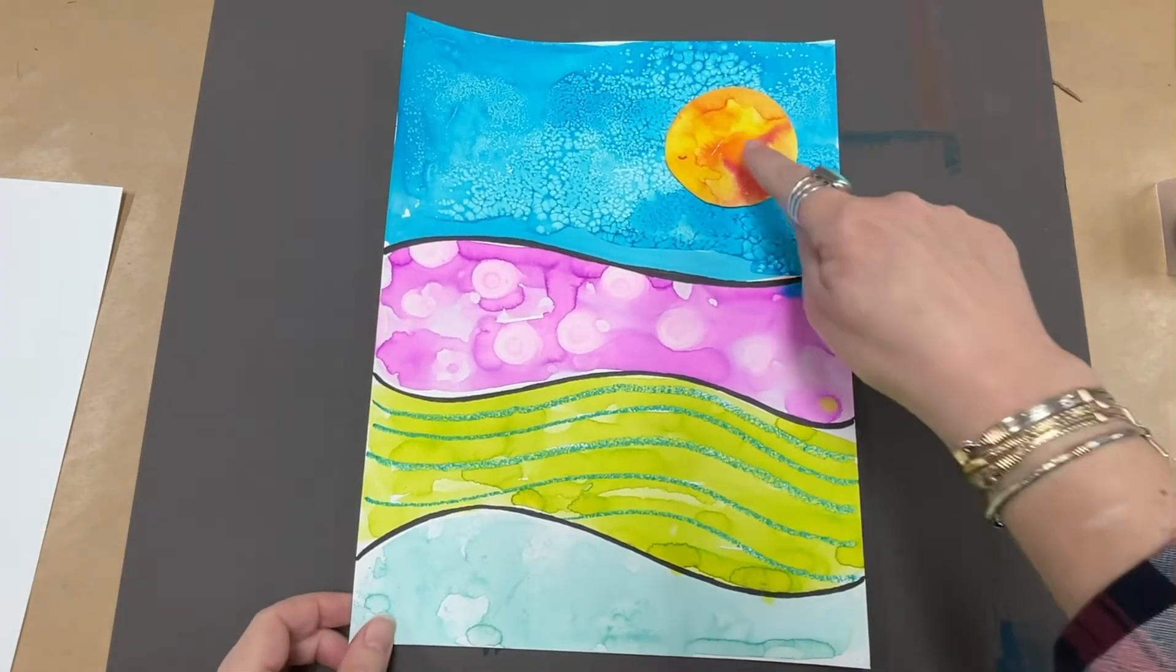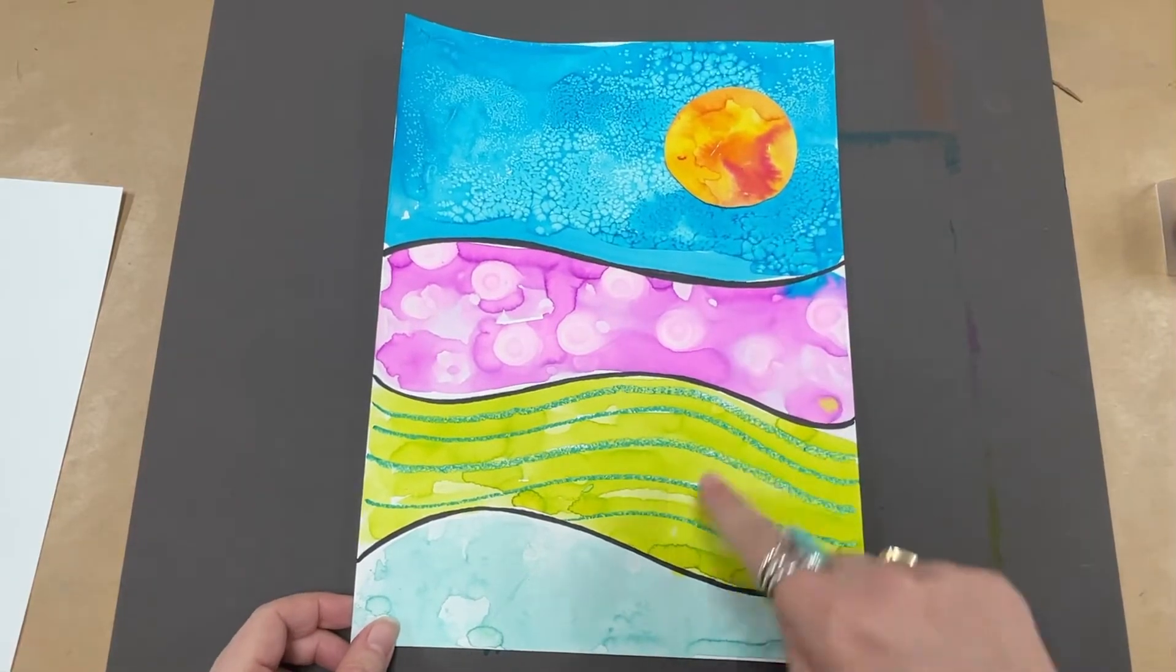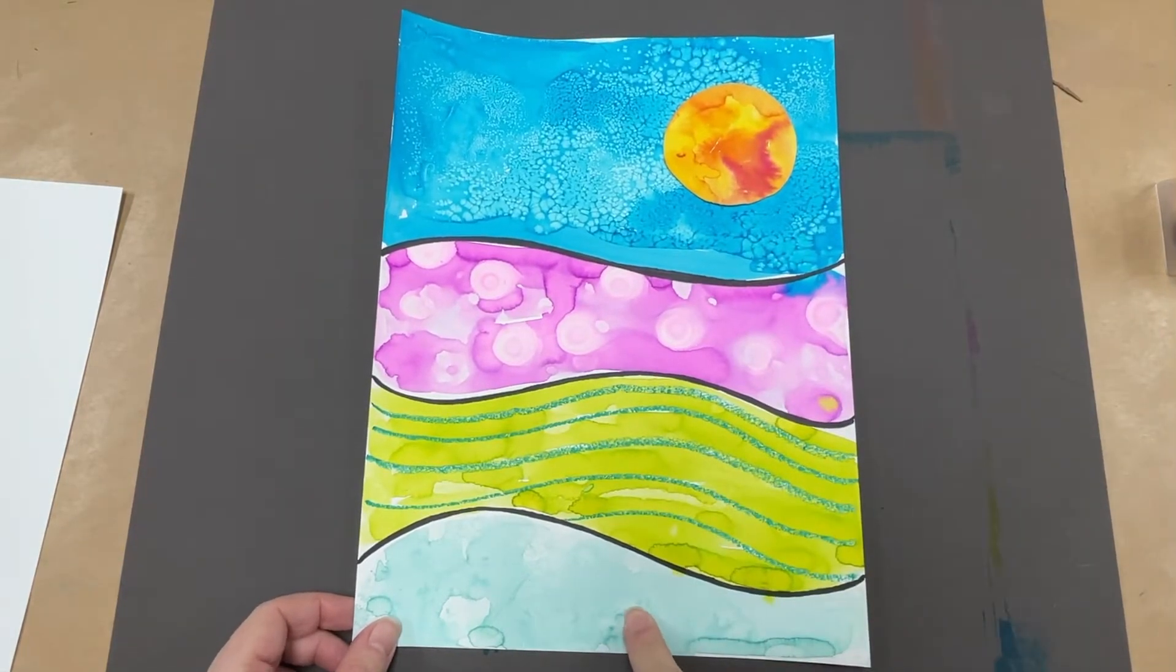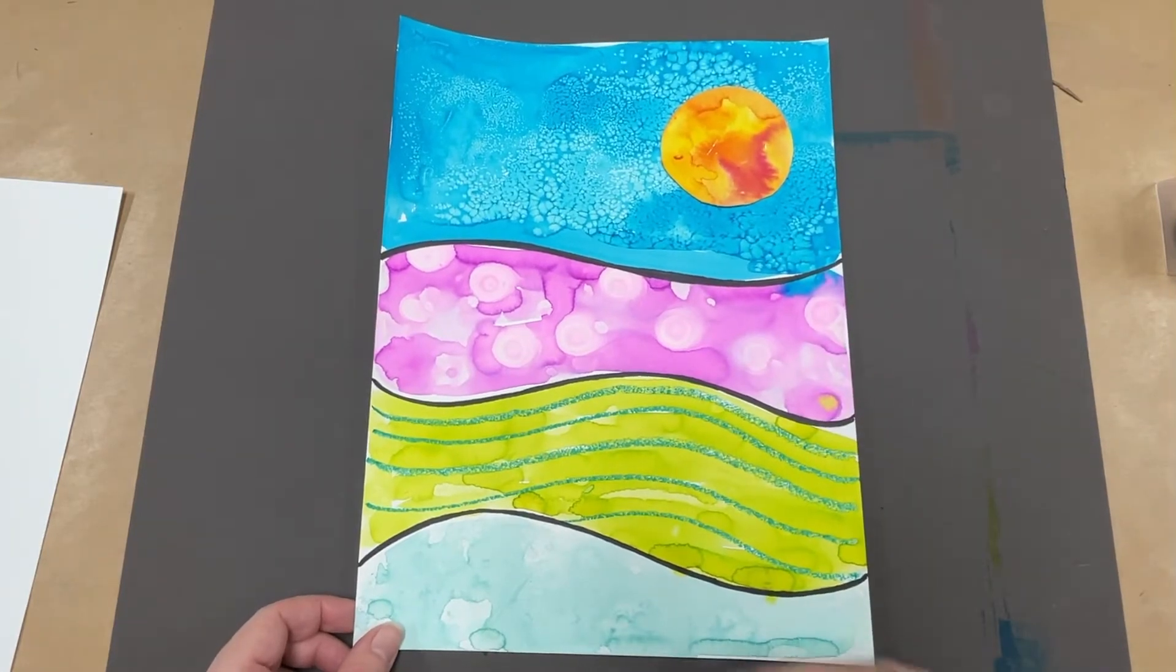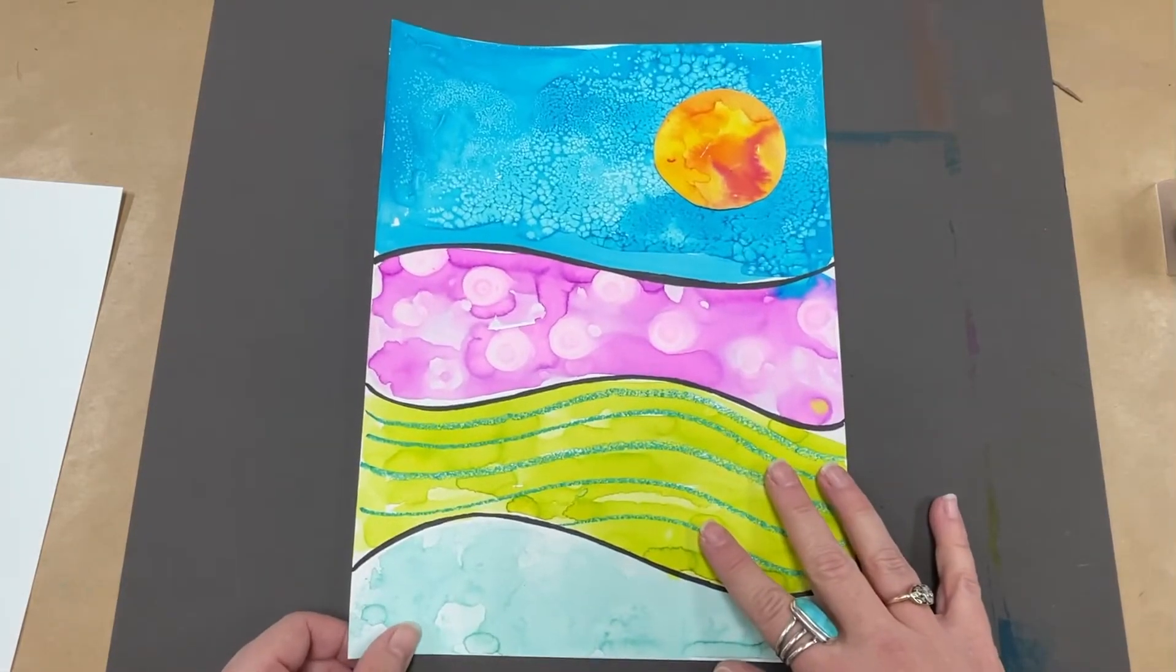So in this landscape there are one, two, three, four, five different watercolor techniques that we're going to use. Each section is a different technique and it's going to all come together to make this colorful landscape.